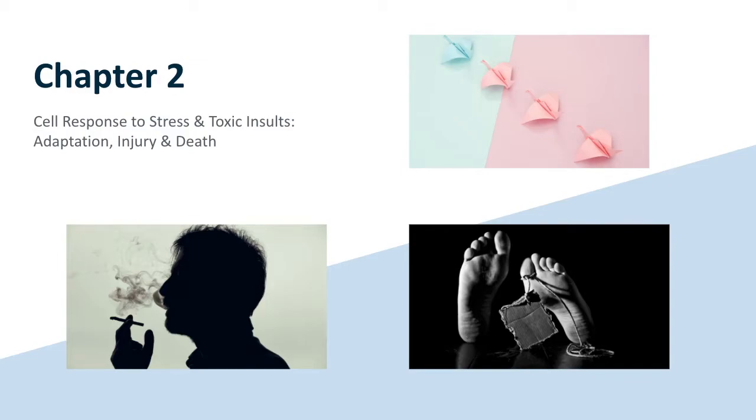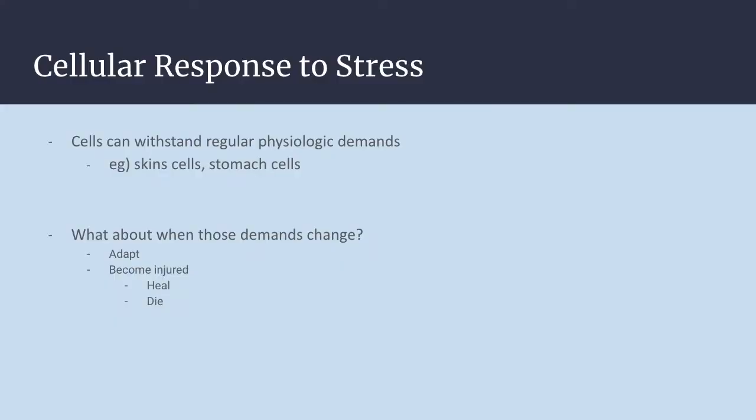In this video we're going to go over the types of cellular adaptations that take place in response to environmental stress and why these responses occur. Normal cells typically have a specific function and structure governed by their specialization, and as long as the cell meets the demands of its environment, it exists in a steady state called homeostasis within regular physiologic demands.